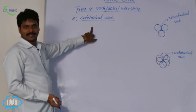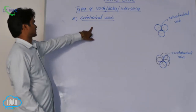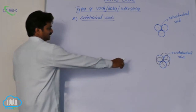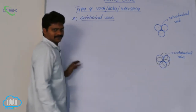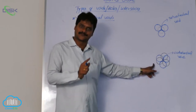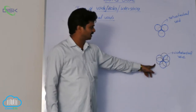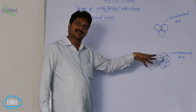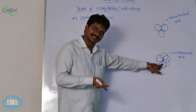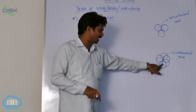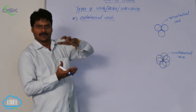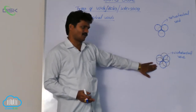The second type of void possible in 3-dimensional close-packed structures is the octahedral void. Here we have a picture — the blue colored spheres are from one layer, and the black colored spheres are from the layer above or below. When 3 spheres of one layer and 3 spheres of another layer are exactly one above the other, they form an octahedral void.